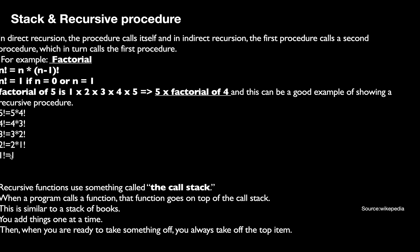When we reach the base condition, 1! = 1. We then go back: 1! = 1 is taken from the top of the stack, so 2! = 2 × 1 = 2. Then 3! = 3 × 2 = 6. Then 4! = 4 × 6 = 24. Then 5! = 5 × 24 = 120. This is how the recursive procedure works using the stack.